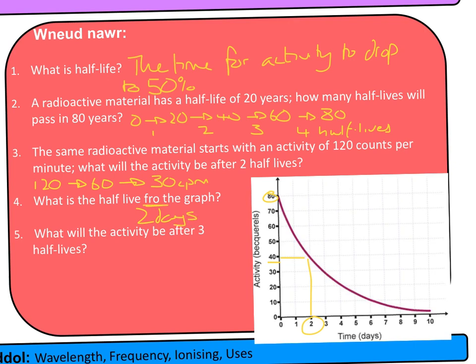After three half-lives, we need the activity. The half-life is two days, so three half-lives is six days. From the graph, the activity at six days is 10. Alternatively: 80 halves to 40, halves to 20, halves to 10 — the same result.